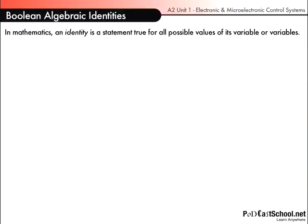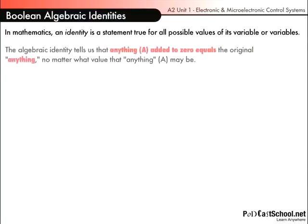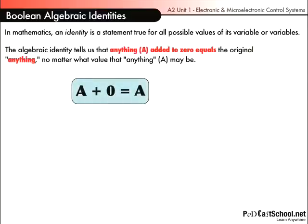So let's get a few things straight. We need to know what an identity is. In mathematics, an identity is a statement true for all possible values of its variable or variables. The algebraic identity tells us that anything (A) added to zero equals the original anything, no matter what value that anything may be.